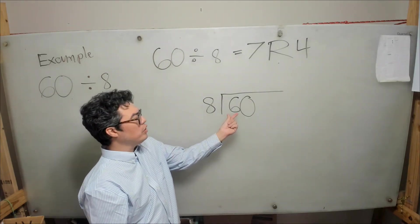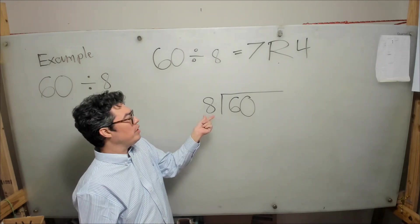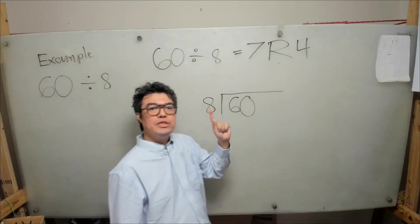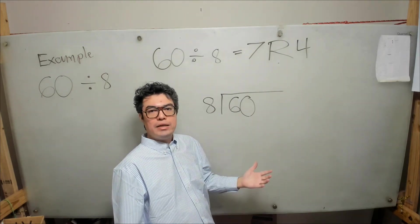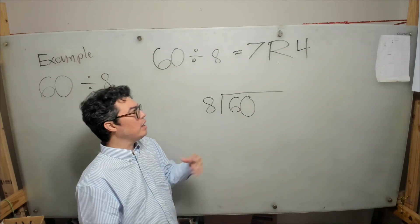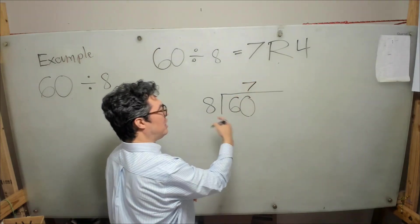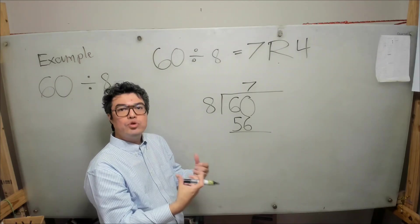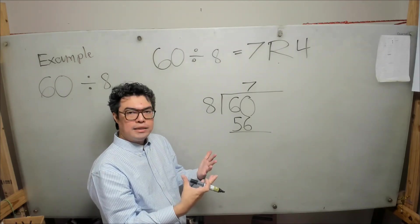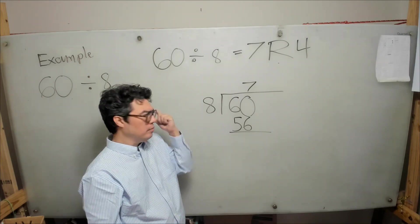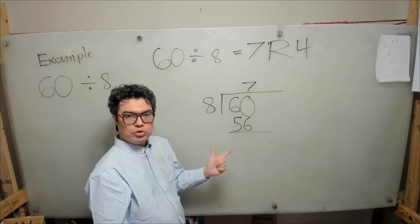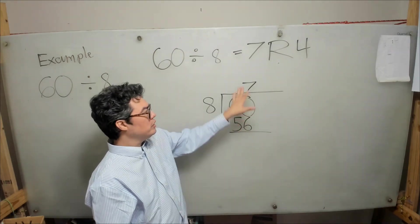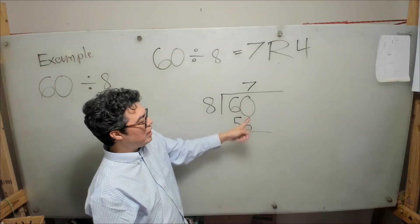How many times does 8 go into 6? It doesn't — 6 is too small. So then we ask: how many times does 8 go into 60? That captures the idea from before: what is the biggest multiple of 8 that is equal to or less than 60? We already know that's 7, because 7 times 8 is 56. Don't hesitate to count on your hands: 8 times 1 is 8, 8 times 2 is 16, and so on.